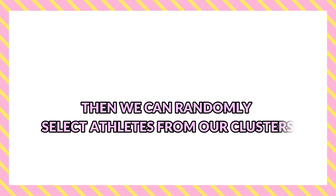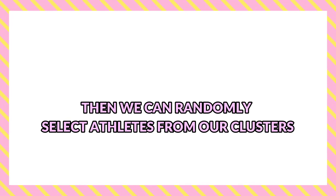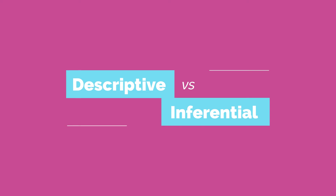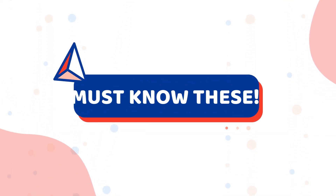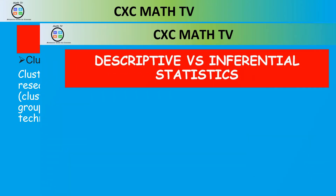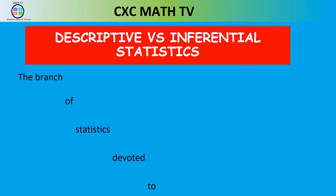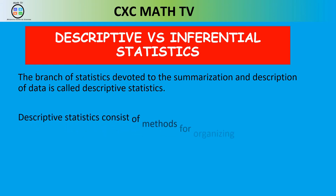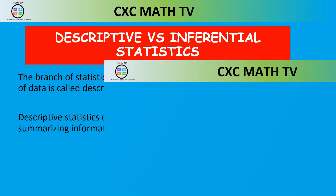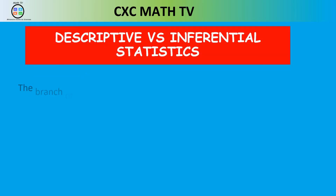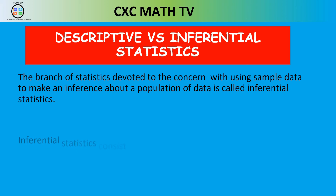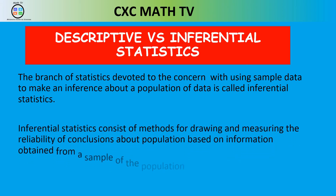Now we need to talk about the important stuff: descriptive versus inferential statistics. This is key because these can come up on the MCQ papers. Descriptive statistics is the branch of statistics devoted to summarizing and describing data. Inferential statistics is the branch where we make a conclusion based on what we have obtained from a sample of the population.